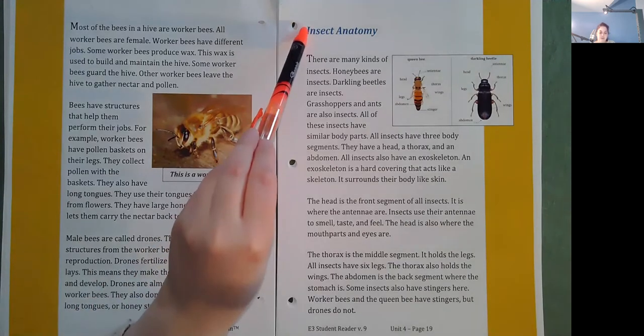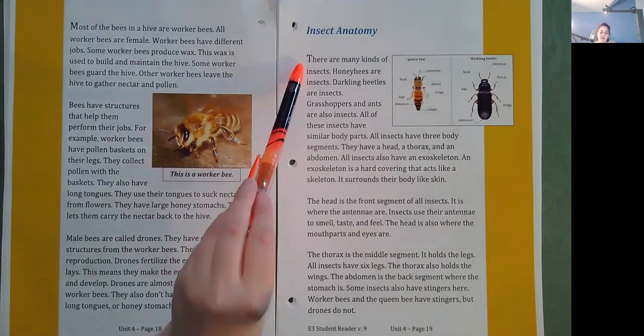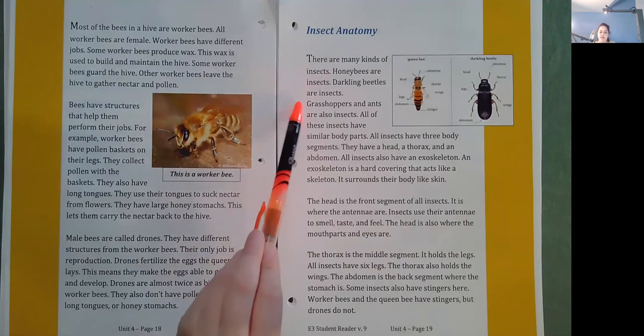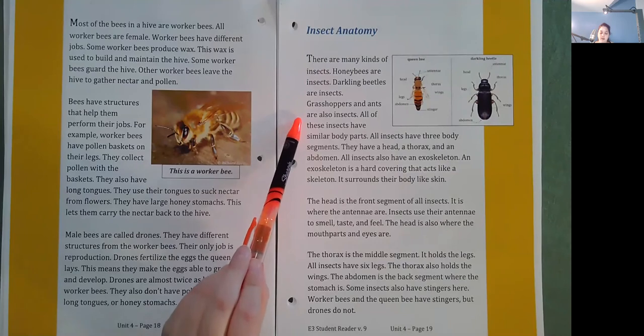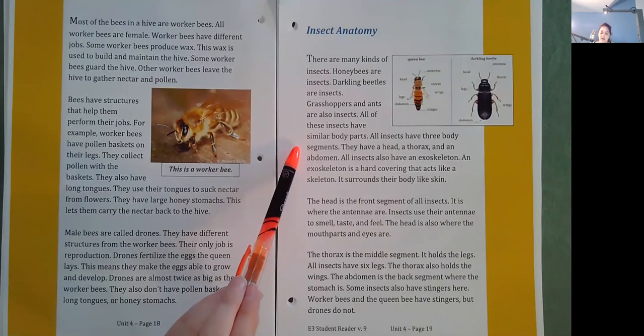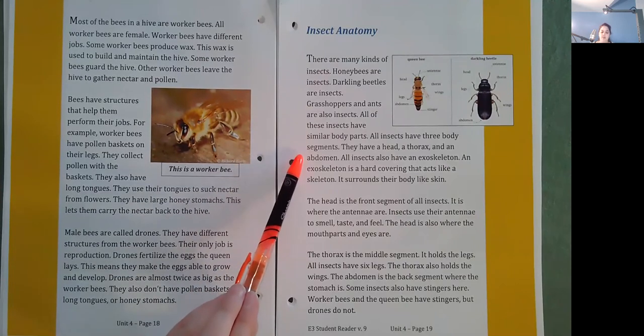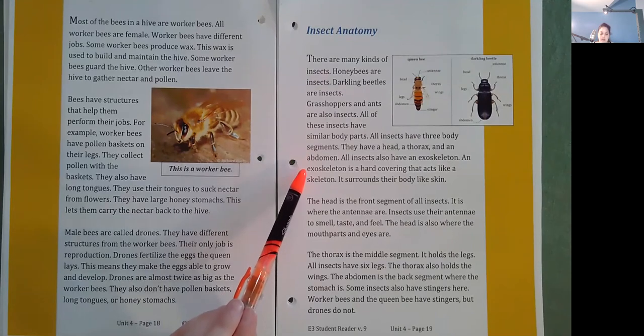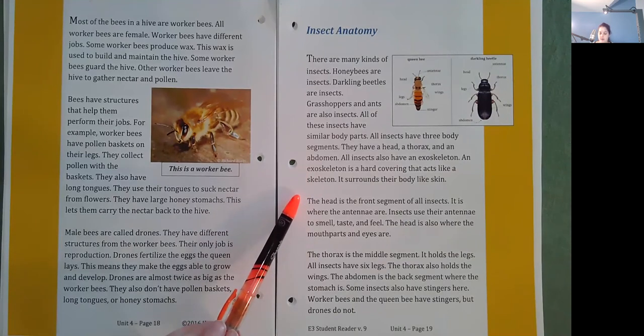Insect anatomy. There are many kinds of insects. Honey bees are insects. Darkling beetles are insects. Grasshoppers and ants are also insects. All of these insects have similar body parts. All insects have three body segments. They have a head, a thorax, and an abdomen. All insects also have an exoskeleton. An exoskeleton is a hard covering that acts like a skeleton. It surrounds their body like skin.